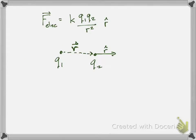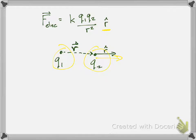Let's take another look at Coulomb's Law — the electric force between two point charges. It's proportional to the values of the point charges divided by their distance squared, in the r-hat direction. If both charges are positive the force is repulsive; if positive and negative, it's attractive. The structure is the same as the gravitational force: Gmm/R².